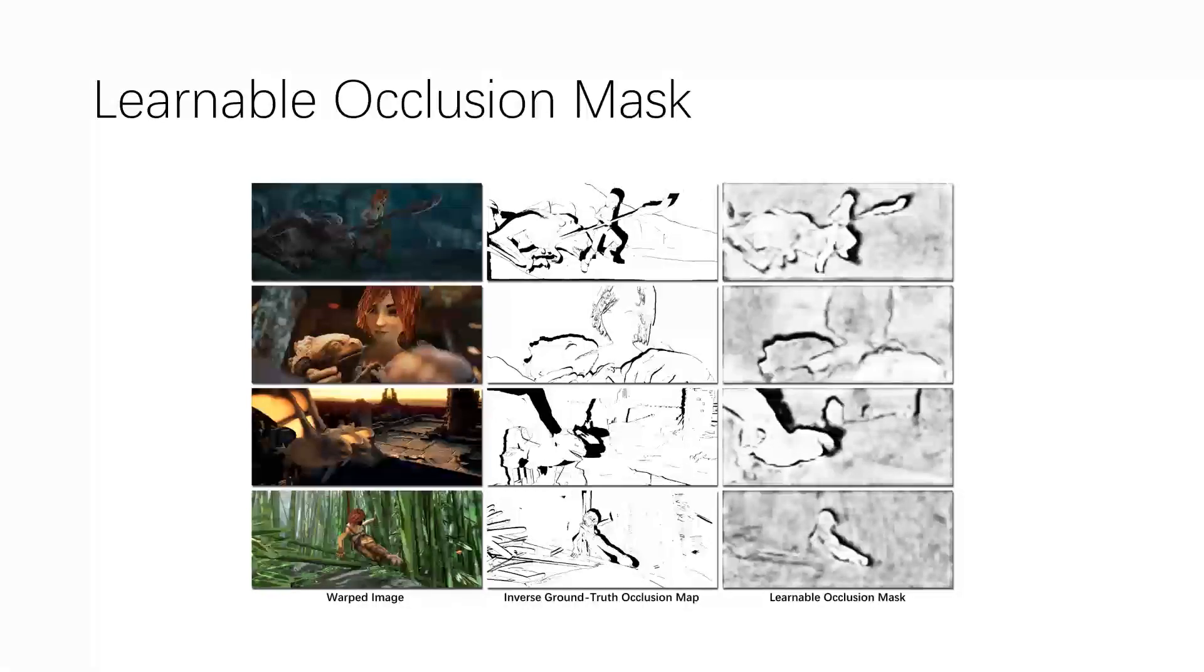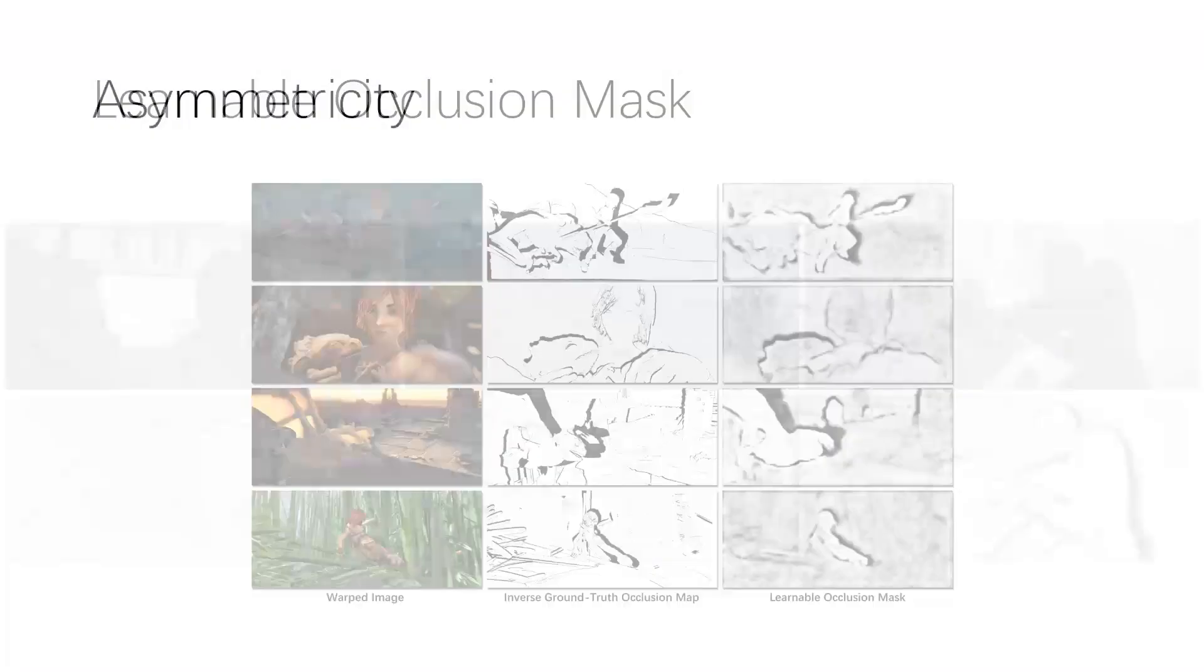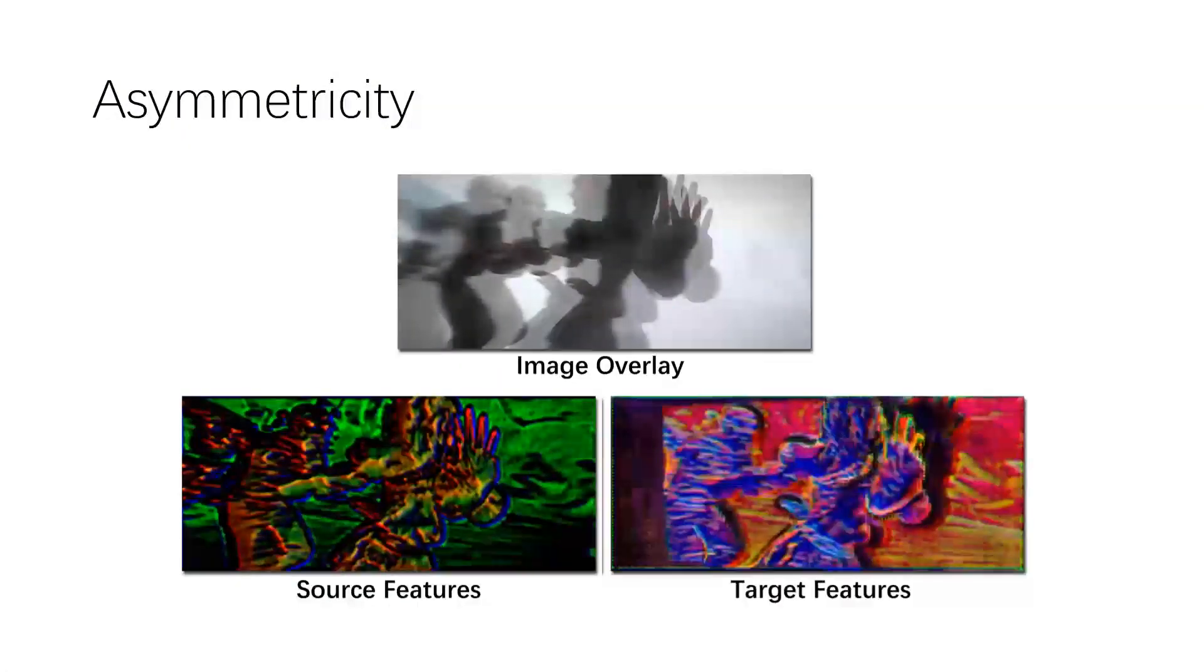In the asymmetric occlusion-aware feature matching module, these are feature maps prior to the cost volume. Comparing the source features with the target features, we can see that the network learns very different feature representations.